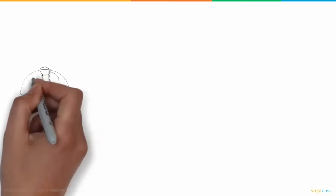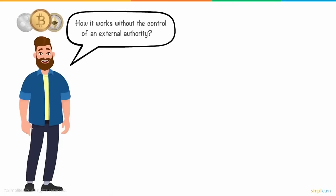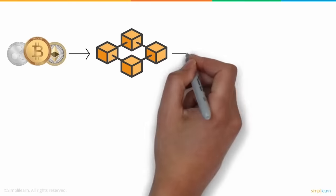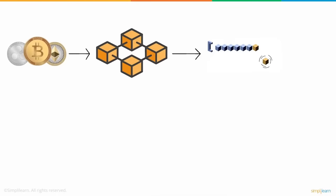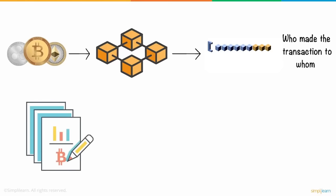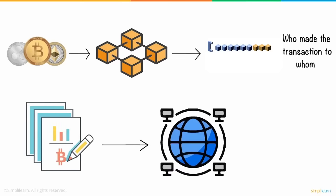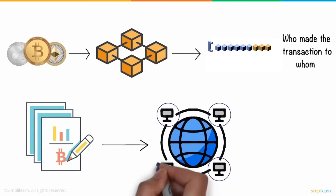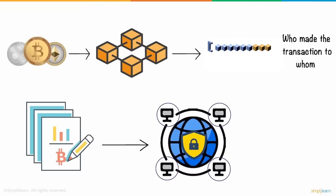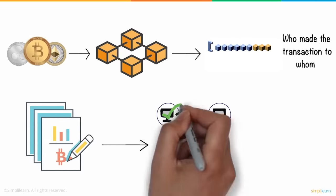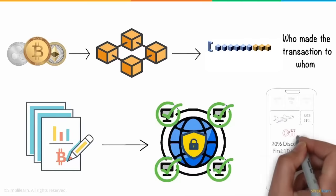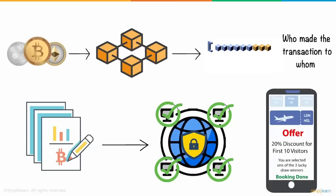Daniel was impressed but wondered how cryptocurrency works without external authority. Upon research, he found that it works on blockchain technology. Blockchain is a set of blocks that record transaction information — who made the transaction, to whom, and the amount — in the form of a digital ledger distributed across the entire network. The data is replicated and stored on each node across the entire blockchain network, making it more secure and impossible to change, hack, or cheat. It is then verified and validated by every node to proceed with transactions.